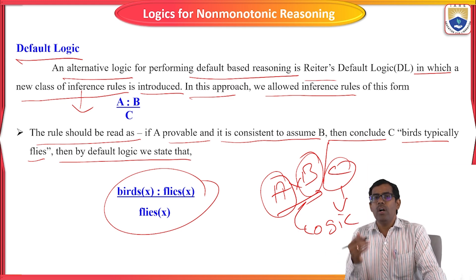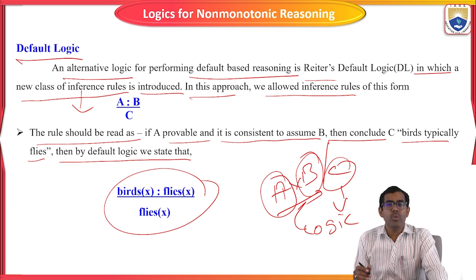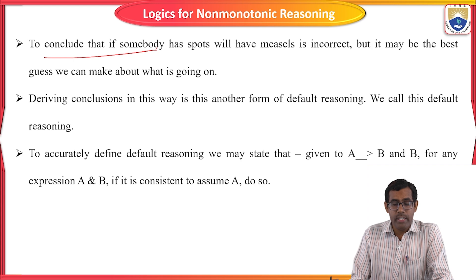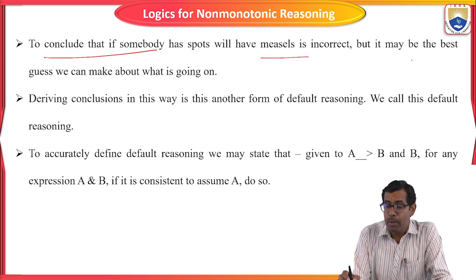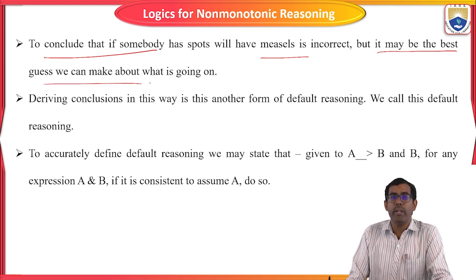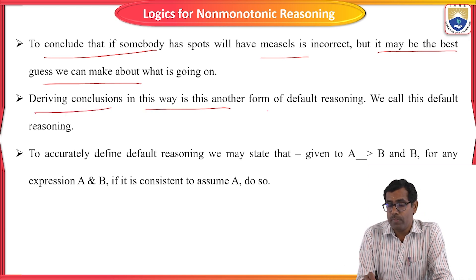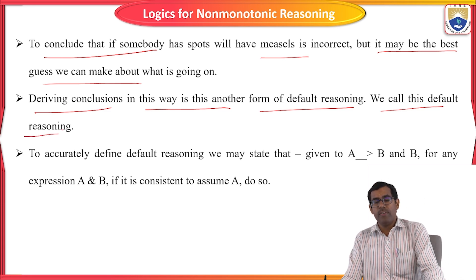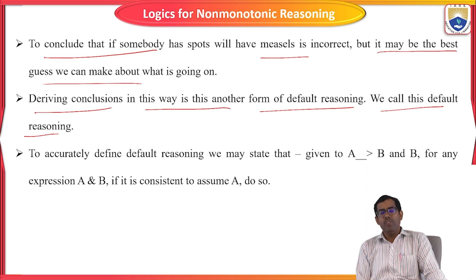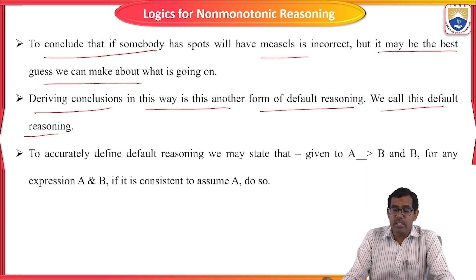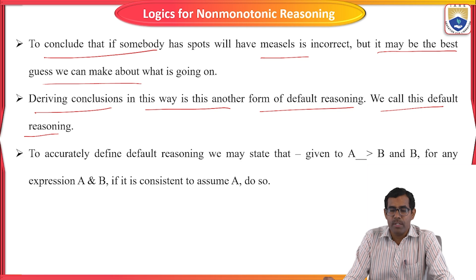The default logic always gives some default solution for the given problem statement. It will not give any false statement in your solutions. We use default logic in non-monotonic reasoning. If someone has a spot that may be incorrect but it may be the best guess we can make, based on your problem statement we predict some solution. Deriving a conclusion in this way is another form of default reasoning.